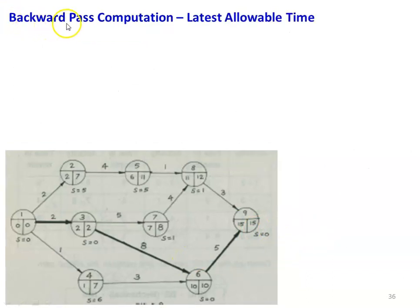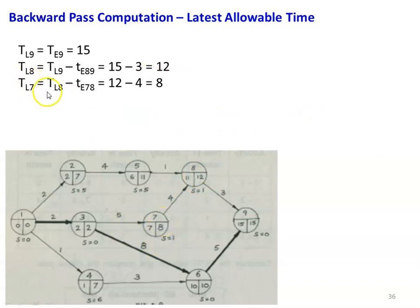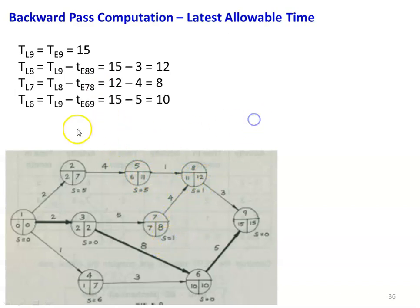Now we take the backward pass computation and calculate the latest allowable occurrence time TL. For the end event, the timing is not given, so we assign TL9 equal to TE9 equal to 15. Then for event 8, there is only one activity emerging from it, so TL8 equals TL9 minus t(8,9) equals 15 minus 3 equals 12. Then TL7 equals TL8 minus t(7,8) equals 12 minus 4 equals 8.